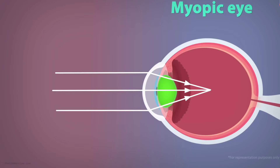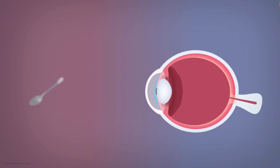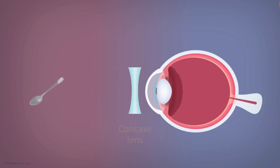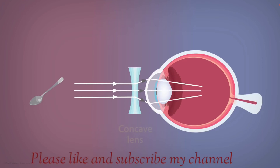So how can we overcome this eye defect? It can be corrected with the help of a concave lens placed in front of the eyeball. We use a concave lens because it diverges light, so the converging rays then fall on the surface of the retina rather than in front of it.